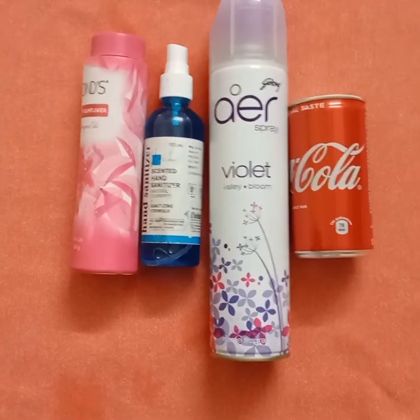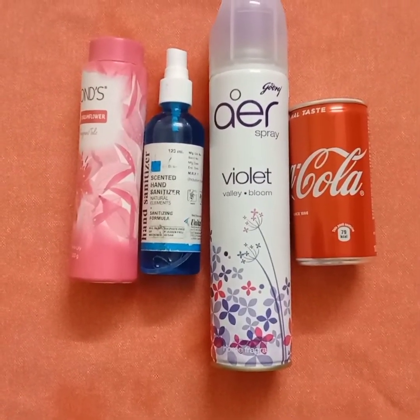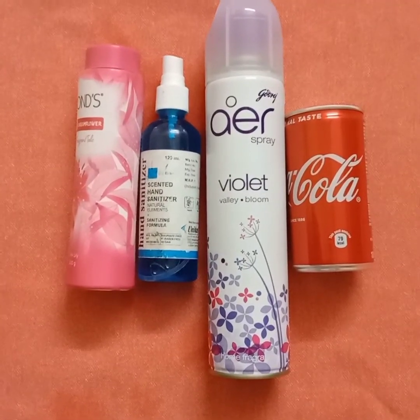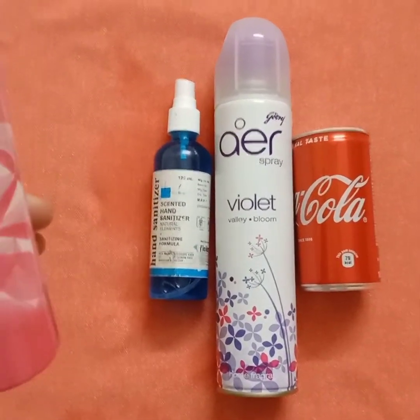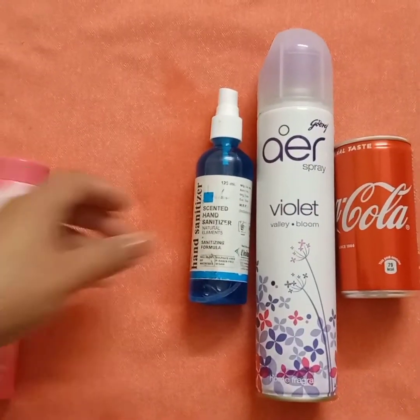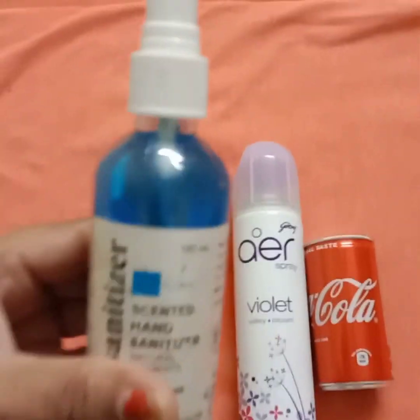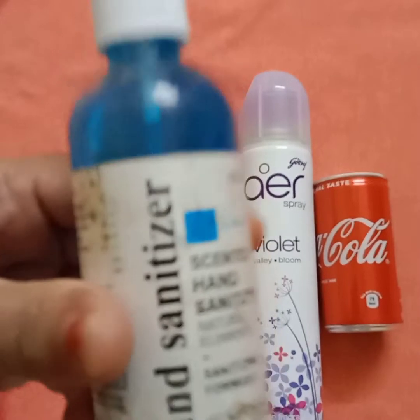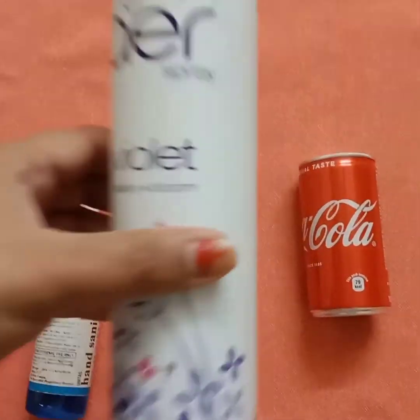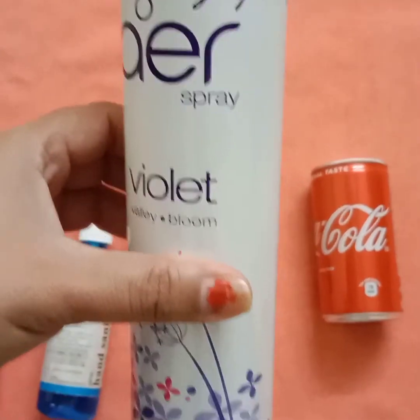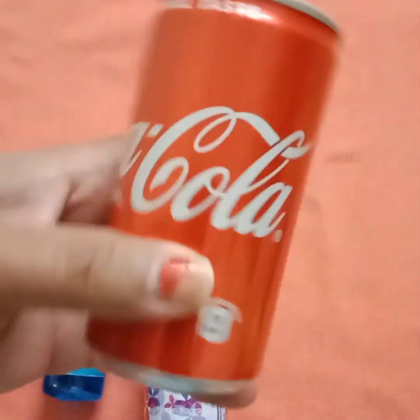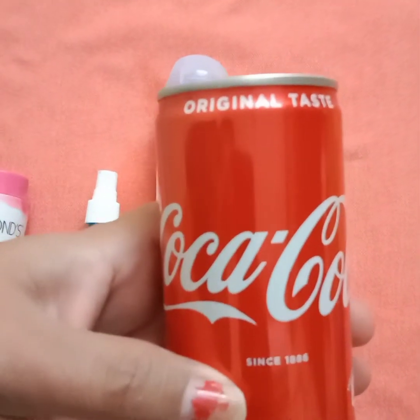Some of the examples of next 3D shape that is cylinder are talcum powder, hand sanitizer, air spray and can of coca-cola.